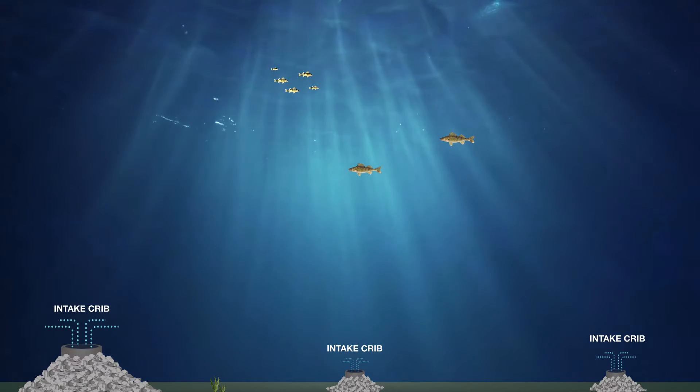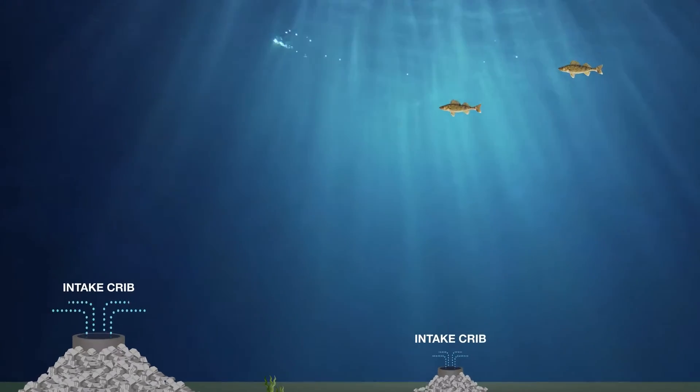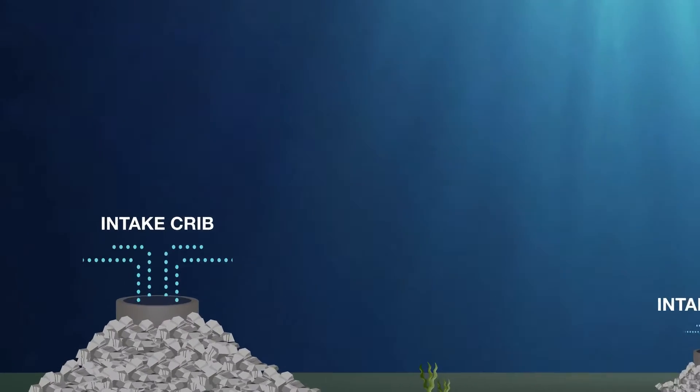The three other plants have cribs that are located below the surface in deeper water. These submerged intakes draw water in from near the bottom of the lake.